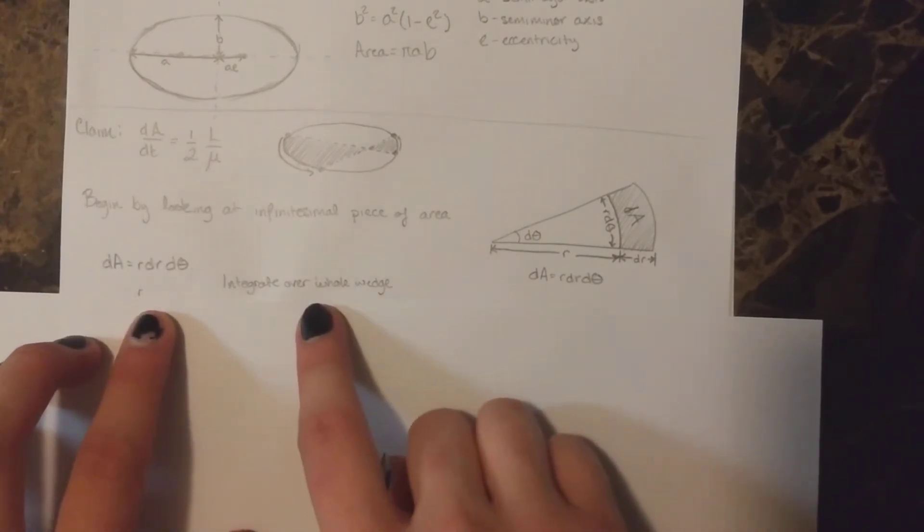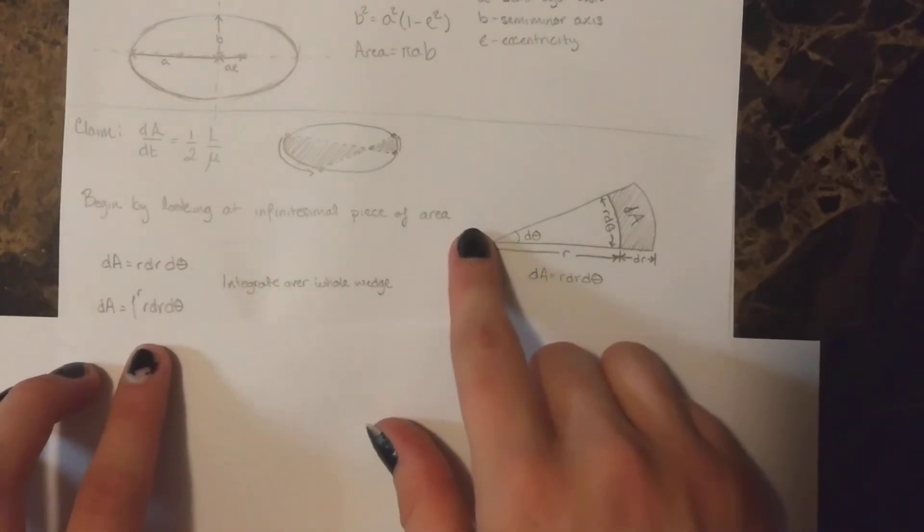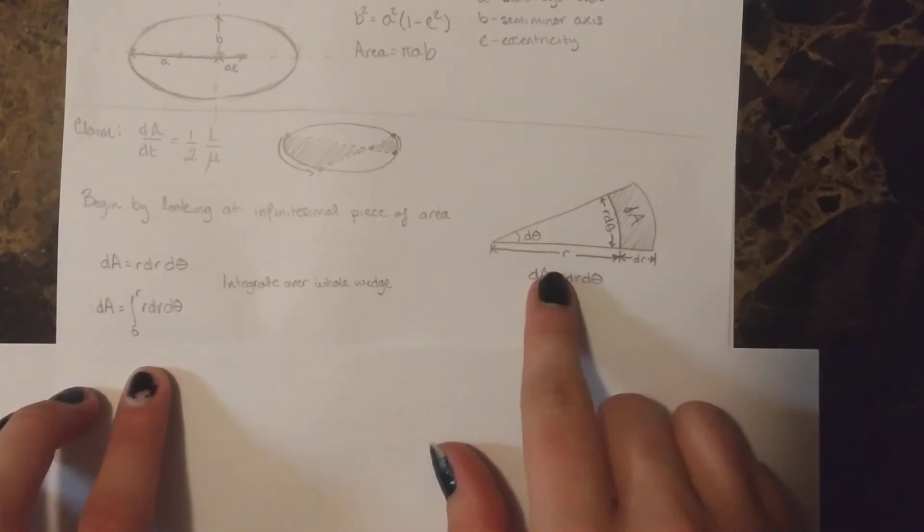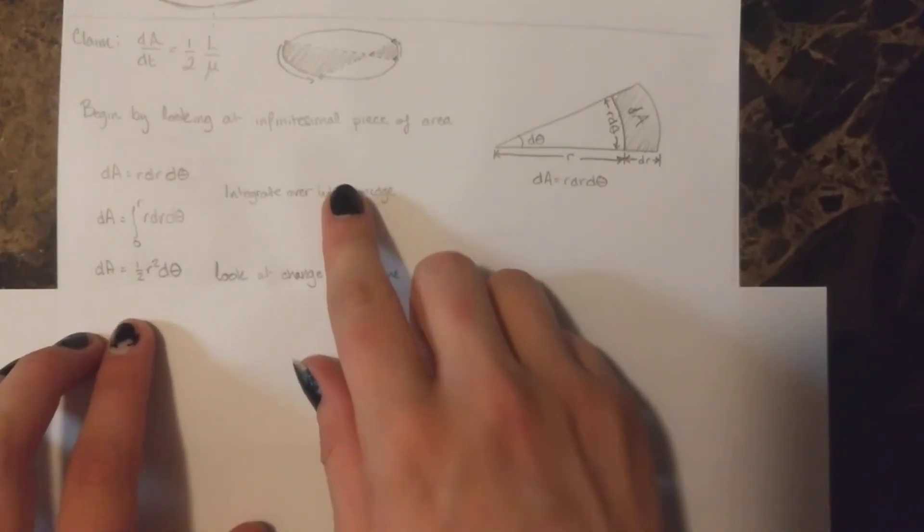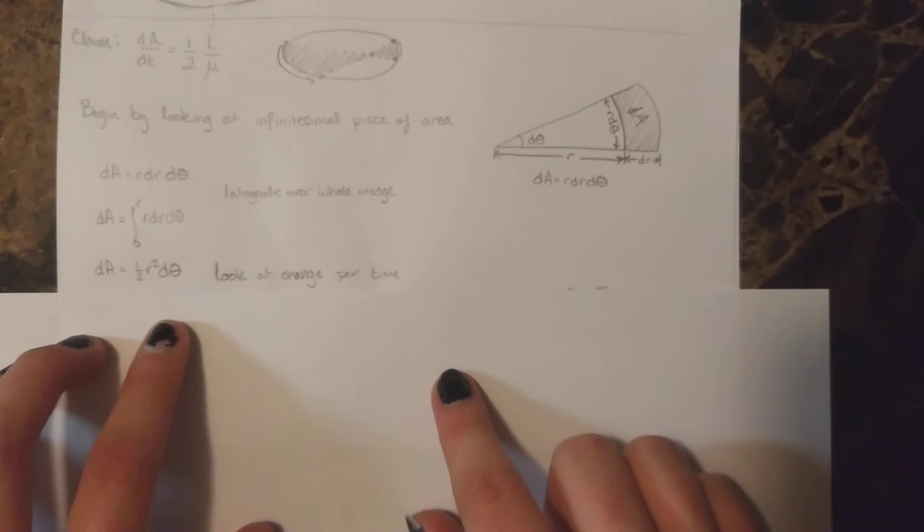So if we take this and we integrate over the entire wedge, that is the whole radius from 0 to r, this dA equals one-half r squared d theta.